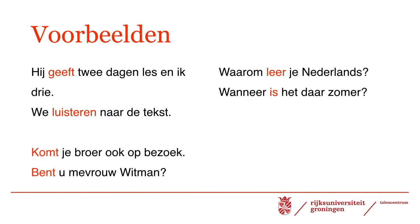To round off, take a look at the following examples. Hij geeft twee dagen les, en ik drie. We luisteren naar de tekst. Komt je broer ook op bezoek? Bent u mevrouw Witman? Waarom leer je Nederlands? Wanneer is het daar zomer? Meaning: he teaches two days a week and I teach three. We will listen to the text. Is your brother coming to visit you? Are you Mrs. Witman? Why do you learn Dutch? When is it summer over there?